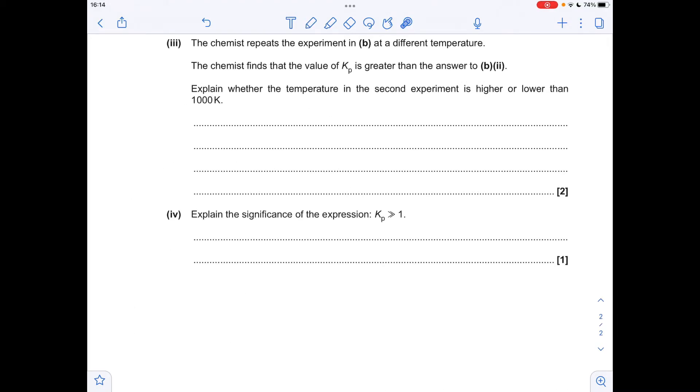Moving on to the next part, we've got to decide whether this new temperature is higher or lower than 1,000 Kelvin. The first thing we'll look at is the Kp value. It's gone up at this new temperature, which means the equilibrium has moved forwards or to the right. We were given the delta H for the equilibrium, and it was negative, so that means the forward reaction is exothermic. What sort of temperature is going to favour the forward exothermic reaction? Well, it's going to be a low temperature. So this second experiment must be carried out at a temperature lower than 1,000 Kelvin.